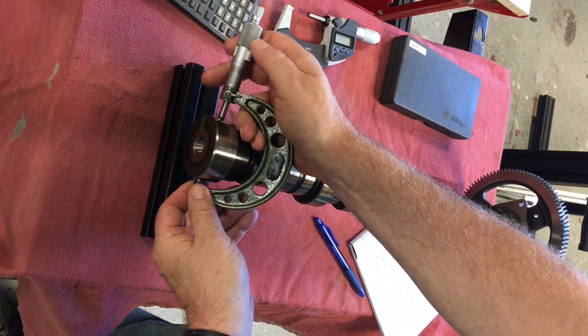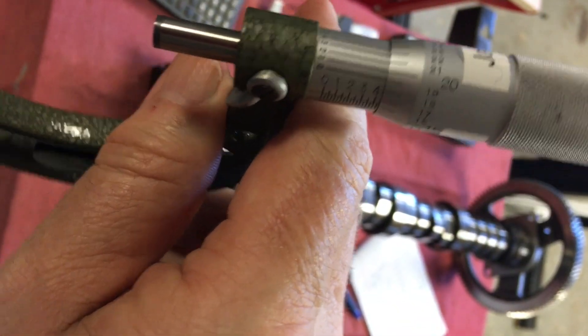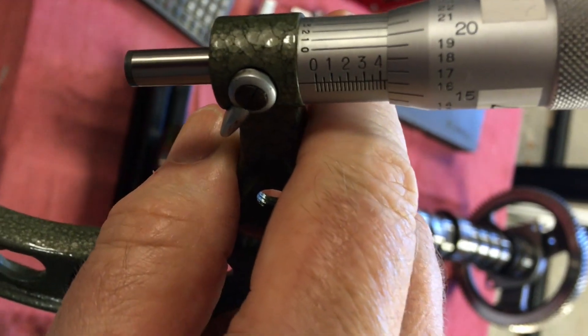The camshaft journals are measured with an outside micrometer. And it's good to have one that measures down to ten thousandths of an inch with a side vernier scale.